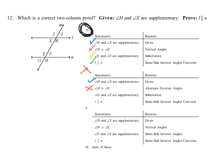For choice C: they give us that angle H and angle X are supplementary — given, check. Angle H and angle E are congruent because they are vertical angles — true, check. Then they say angle E and angle X are supplementary because they're same-side interior angles. Here's the trick: you can only make that statement — that because they're same-side interior angles they're supplementary — if you already know the lines are parallel.